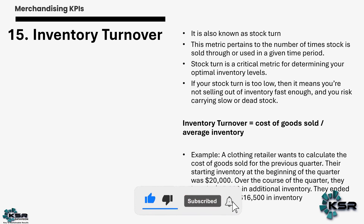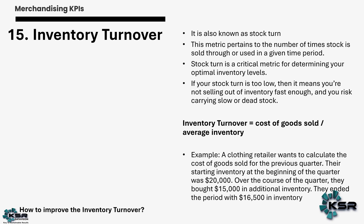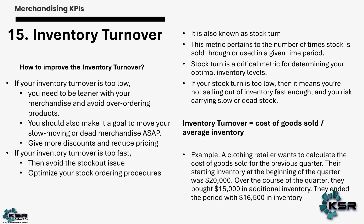An inventory turnover of 1.01 — is it good or bad? The bare minimum should be greater than or equal to 2. Equal to 2 means you are optimally managing inventory; more than 2 is very good. Since we got only 1.01, the retailer is selling slow-moving items. To improve: avoid reordering such products, and work on giving discounts and reducing prices to move existing inventory faster. If inventory turnover is too high, it may cause stockout issues.